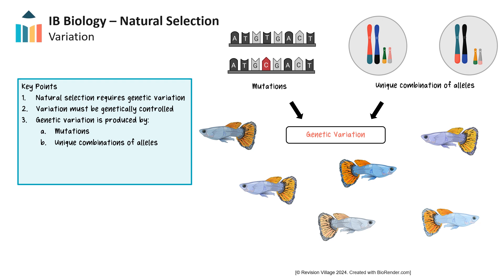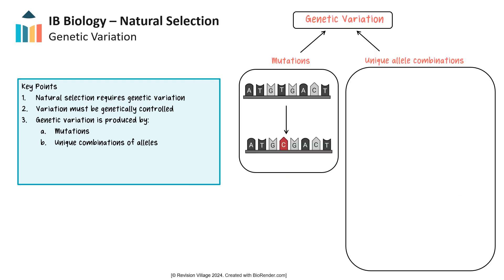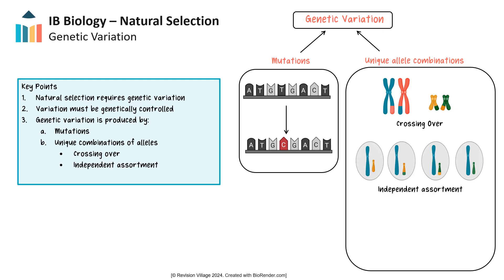Changes in alleles or unique combinations of existing alleles can lead to new phenotypes or characteristics. In sexually reproducing species, the recombination of alleles is a powerful source of variation in the population. The recombination of alleles occurs in three different processes: crossing over and independent assortment occurring during meiosis, as well as random fertilization. Check out our other key concept videos to see these processes in more depth.